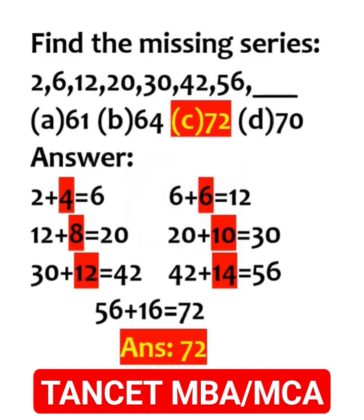Find the missing series: 2, 6, 12, 20, 30, 42, 56. Adding 4, 6, 8, 10, 12, 14 — we will get the next number.